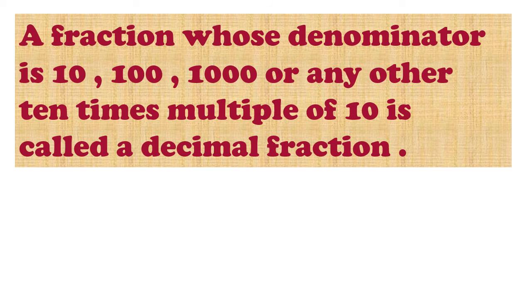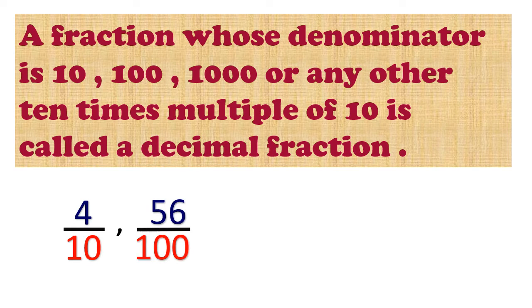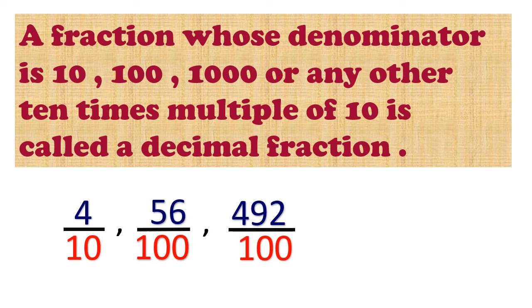First, we are going to see what is meant by decimal fraction. A fraction whose denominator is 10, 100, 1000, or any other multiple of 10 is called a decimal fraction. For example, 4 upon 10 — here the denominator is 10. Similarly, 56 upon 100 — again the denominator is a multiple of 10. Similarly, 492 divided by 100 or 91 divided by 100. These all are examples of decimal fractions.